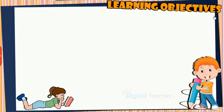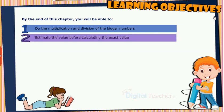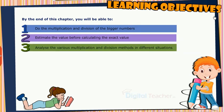Learning Objectives: By the end of this chapter, you will be able to do the multiplication and division of bigger numbers, estimate the value before calculating the exact value, and analyze the various multiplication and division methods in different situations.